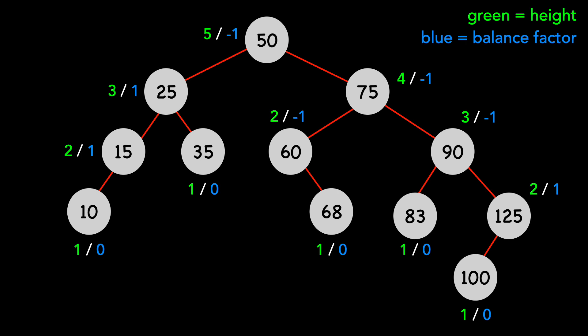Let's do one more example, this time deleting 10. It's a leaf, so we don't need to replace any nodes. Just remove node 10. The height of 15 updates to 1, and the height of 25 updates to 2. Traversing back up the tree, we see we have a violation at node 50, as its balance factor is negative 2.